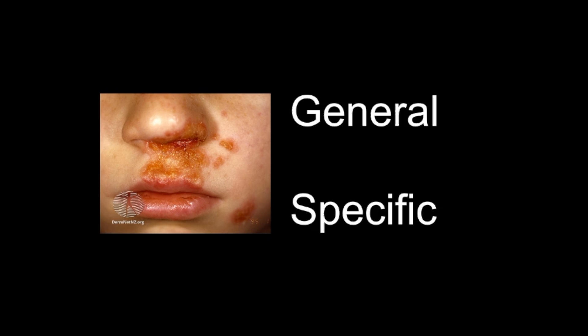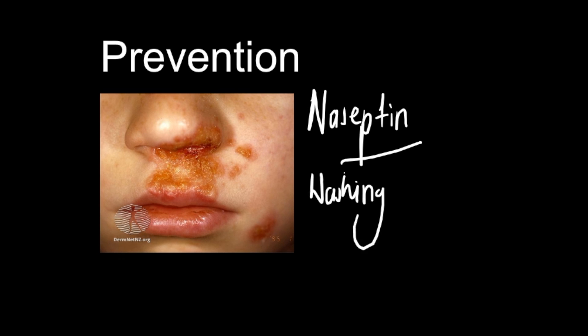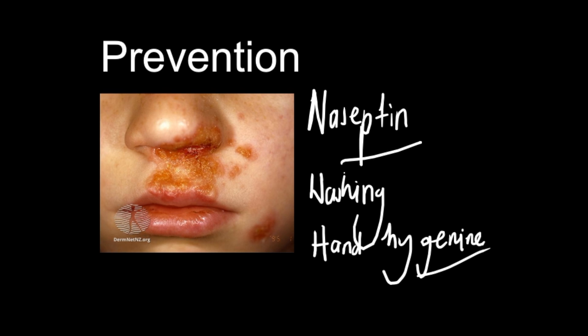Preventative measures include applying Naseptin cream into the nostrils — avoiding this in patients with peanut allergies — washing daily with antibacterial soaps, cutting nails, and maintaining good hand hygiene. Identify and treat the source of reinfection, which is often another infected person or carrier in the household, as impetigo is contagious. Children must stay away from school until crusts have dried out or for 24 hours after starting oral antibiotics. Use separate towels and flannels, and launder clothes and linen daily.